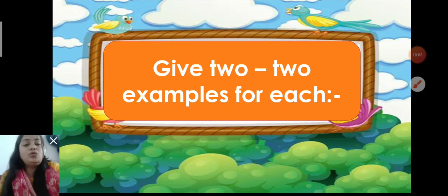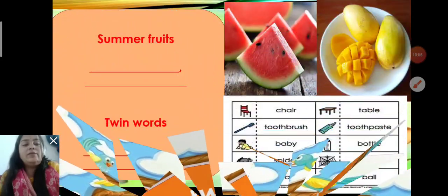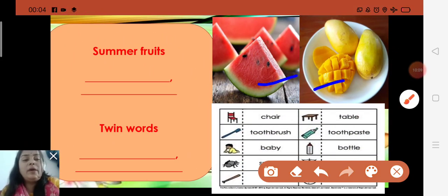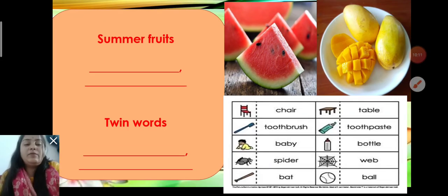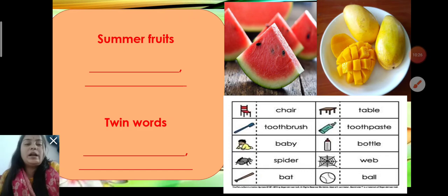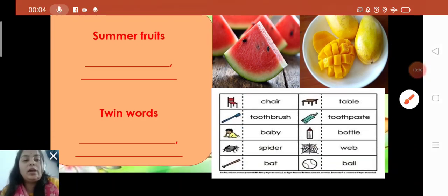Now, after children, you will write the two examples for each. Like two summer fruits. There you can write watermelon and mangoes. They are summer fruits. They are very juicy fruits. Two twins words. And you all know children, twins words. It will always go together. Like chair and table, toothbrush and toothpaste, baby bottle. These are twins words that will also be called pairing words.